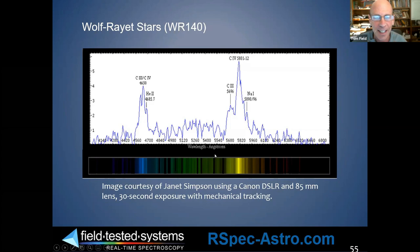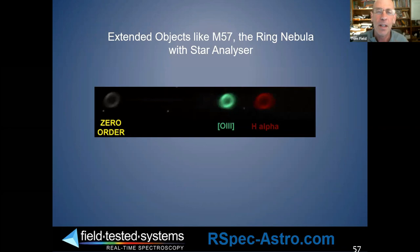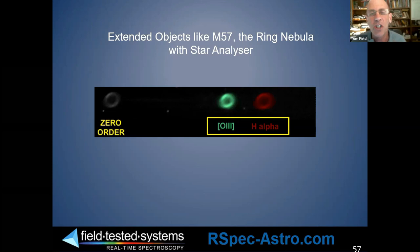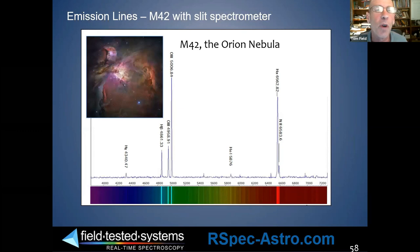Tom shows the ring nebula spectrum — an extended object that without a slit is normally just a smear, but because it emits really only two colors it's interesting: hydrogen alpha and ionized oxygen (O III — Roman numeral three — meaning some electrons have been ejected). Then he shows the Orion Nebula captured with a slit spectrometer, showing the same hydrogen alpha and O III lines as an extended object. With a slit you can see much more interesting spatial detail than with a slitless grating.